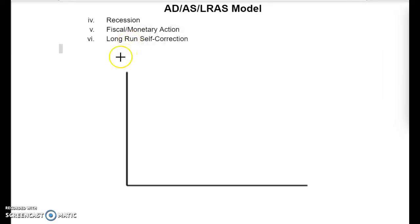Hello students. I'm going to be going over the AD/AS/LRAS model. I'm breaking this down into three graphs. The first one is going to be a recession, and then we're going to look at what happens if we have fiscal or monetary action and where it's going to move, and then long-run self-correction is the other side of it.